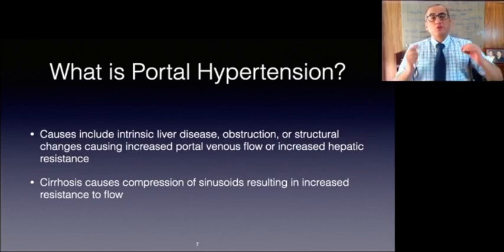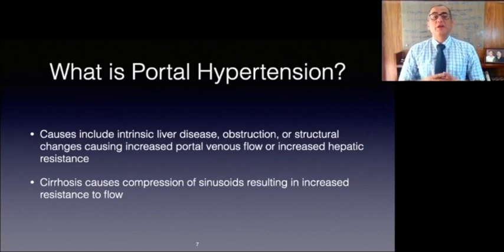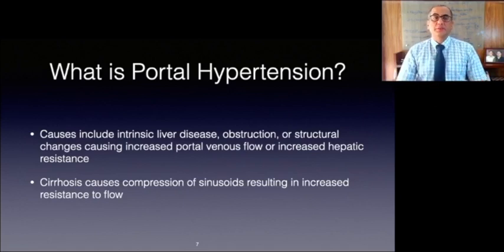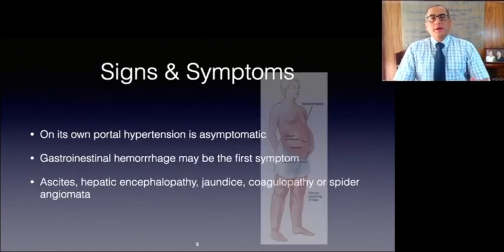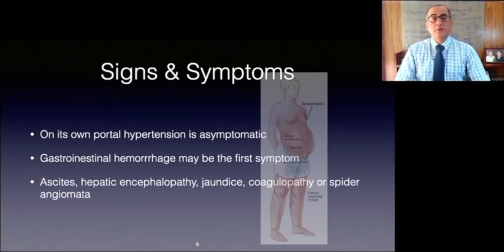Normally, portal vein pressures range from between 1 to 4 mmHg higher than the hepatic vein free pressure, and not more than 6 mmHg higher than the right atrial pressure. Pressures that exceed these limits define portal hypertension. Gastrointestinal hemorrhage may be the initial presenting symptom. Those patients with more advanced liver disease often present with ascites, hepatic encephalopathy, jaundice, coagulopathy, or spider angiomata.